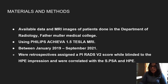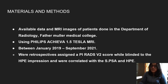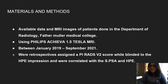Regarding materials and methods, available data and MR images of patients were used, performed in the Department of Radiology of Fardumura Medical College. We used a Philips Achieva 1.5 Tesla MRI machine. Data was collected between January 2019 and September 2021. Cases were retrospectively assigned a PIRADS Version 2 score while blinded to the histopathological impression, and were then correlated with serum PSA and HPE findings.